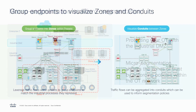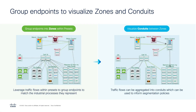Prior to defining any policies, Cyber Vision enables organizations to understand what today looks like — what devices are deployed in the environment, what communications are occurring between those devices, and ultimately which policies can be most effective. Cyber Vision provides the ability to group assets, understand which zones are appropriate for the environment, which communications should be occurring, and the policies that can be applied to those communications.